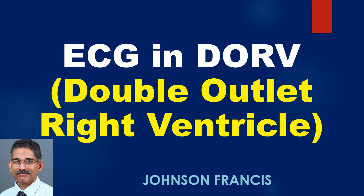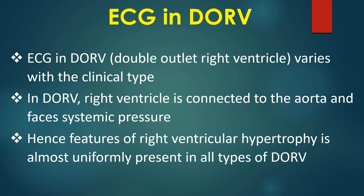ECG in DORV – Double Outlet Right Ventricle. ECG in DORV varies with the clinical type. In DORV, the right ventricle is connected to the aorta and faces systemic pressure. Hence, features of right ventricular hypertrophy are almost uniformly present in all types of DORV.